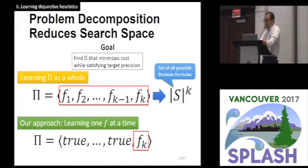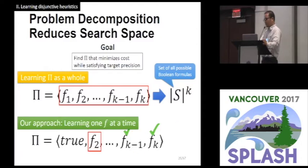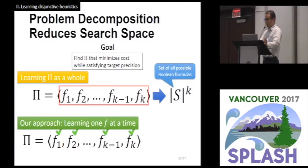We were able to reduce the search space by learning one boolean formula at a time. In our approach, the sequence of learning is very important. First, we learn the deepest context formula Fk, while the other formulas are set to true. After learning Fk, we move on to the next deepest formula Fk-1, while having the learned formula Fk in the parameter. We repeat the same steps all the way down to F2 and F1. Now we have parameter pi. The search space of our approach is k times the size of S, which is much smaller than the original problem's. The remaining question is, how to learn this boolean formula?